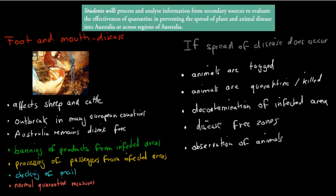So what we have to cover in this video is this dot point: students will process and analyze information from secondary sources to evaluate the effectiveness of quarantine in preventing the spread of plants and animal diseases into Australia or across regions of Australia. We have to talk about effectiveness - how effective have we been with quarantine to make sure that disease doesn't spread. The verb is 'evaluate', so that's a high order verb, so we have to know some detail.